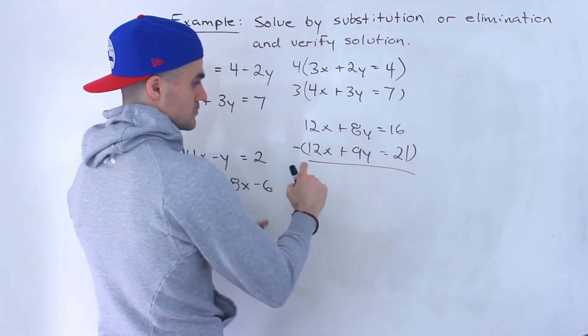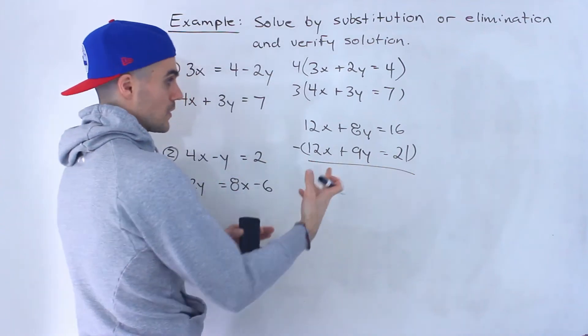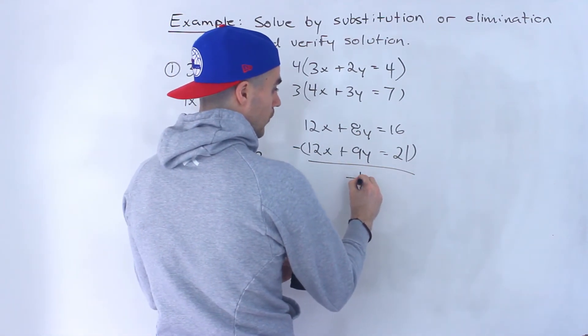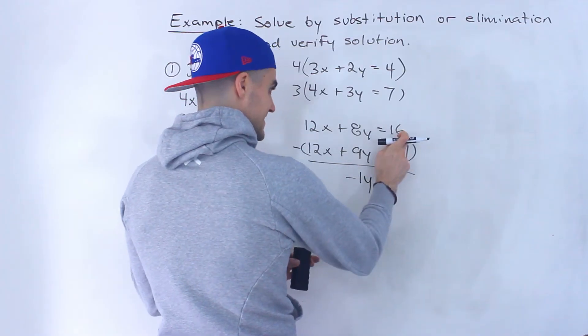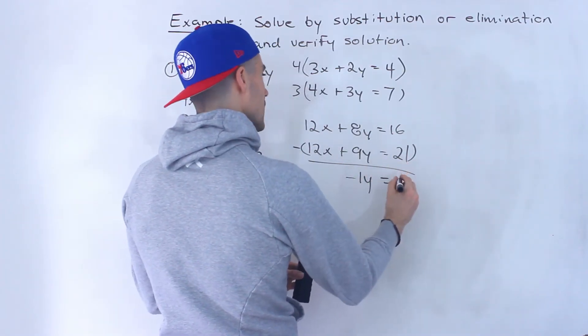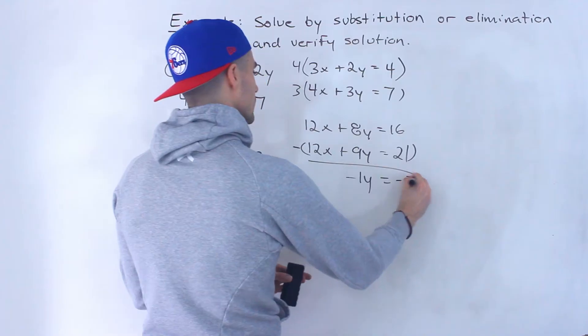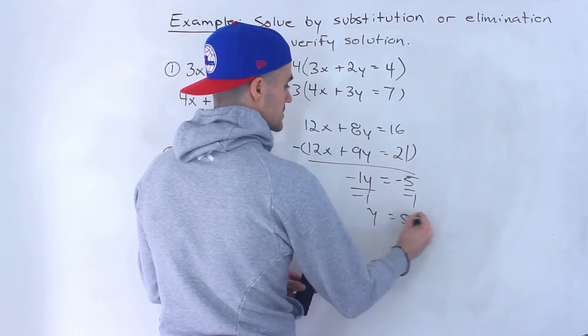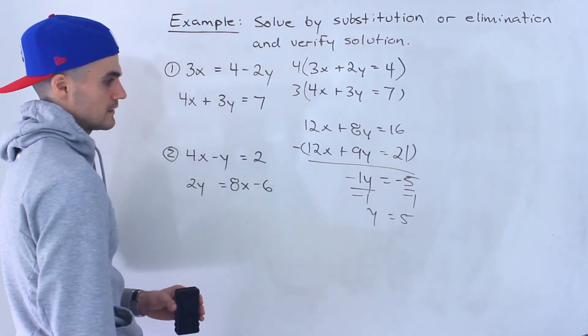Then we could subtract both. So 12x minus 12x would be 0x. The x's go away as we wanted. 8y minus 9y would give us negative 1y and 16 minus 21 would give us negative 5. Then we divide both sides by negative 1 so y would be positive 5.